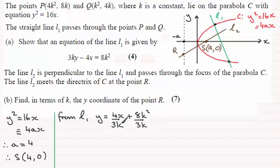So if I divide each of the terms by 3k, then from this we can see that the gradient of L1 is 4 over 3k. So we can see then that therefore the gradient of L2 must be equal to the negative reciprocal of this, in other words minus 3k over 4.